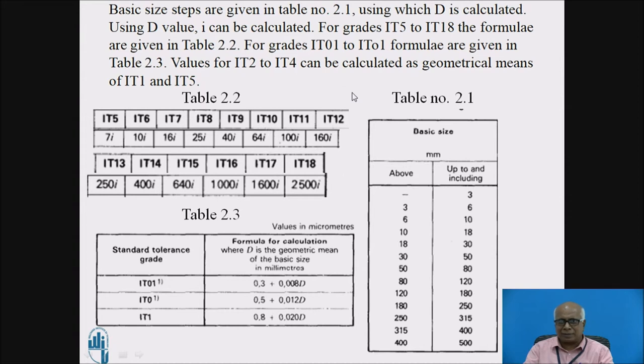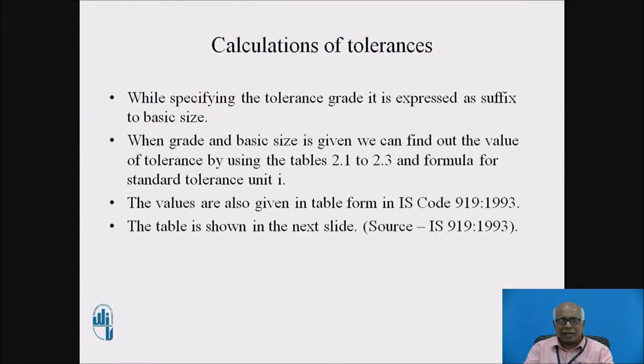So from IT0, 1 to IT18, the grades of tolerances are specified. These values are also specified like this, that first basic size is given and tolerance grade is expressed as its suffix. When grade and basic size is given, we can find out the value of tolerance by using table 2.1 to 2.3 and formula for standard tolerance unit I. These values are also given in table form in IS code 919-93.